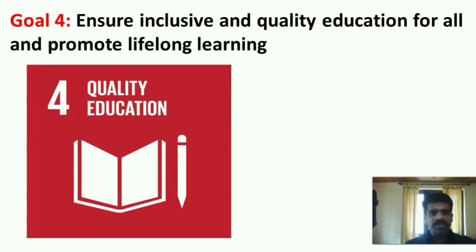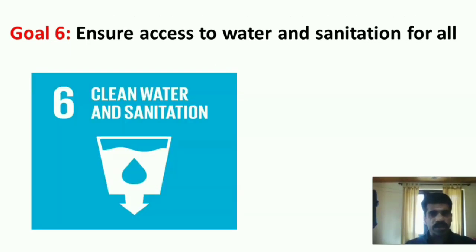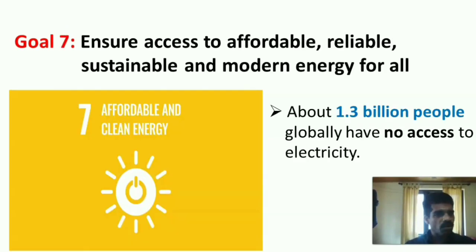Goal 4: Ensure inclusive and quality education for all and promote lifelong learning — Quality Education. Goal 5: Achieve gender equality and empower all women and girls — Gender Equality. Goal 6: Ensure access to water and sanitation for all — Clean Water and Sanitation. Goal 7: Ensure access to affordable, reliable, sustainable and modern energy for all. Here energy means electricity; about 1.3 billion people globally have no access to electricity — Affordable and Clean Energy.